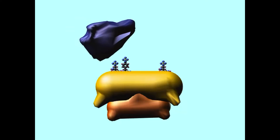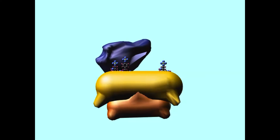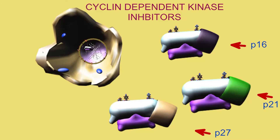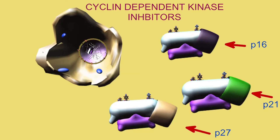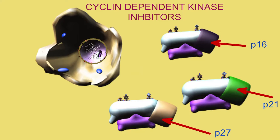The non-dividing cell will not produce high levels of cyclin D. It will not phosphorylate cyclin-dependent kinases 4 and 6 to prepare for cell division. And it will produce cyclin-dependent kinase inhibitors, such as protein 16, protein 21, and protein 27. These block the activity of the cyclin D-CDK complexes so that they cannot push the cell from G0 into G1.